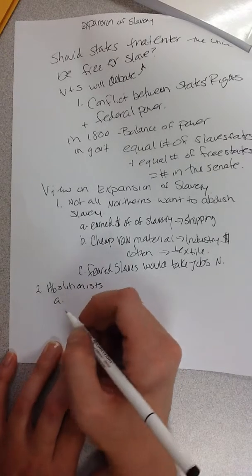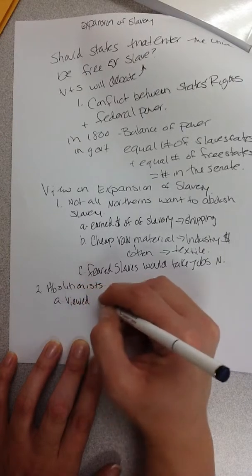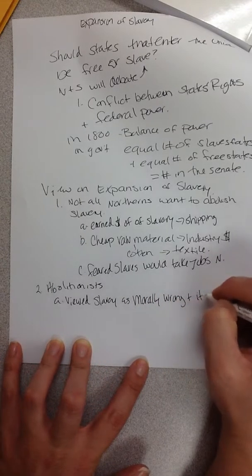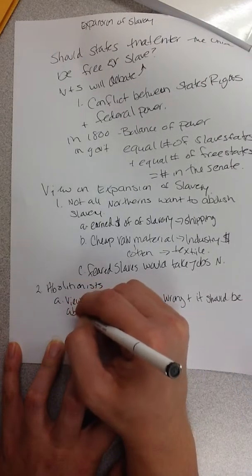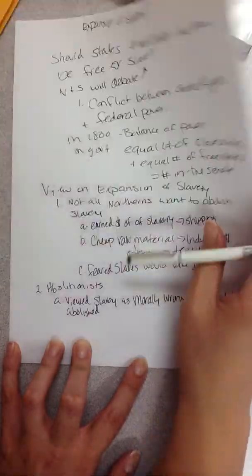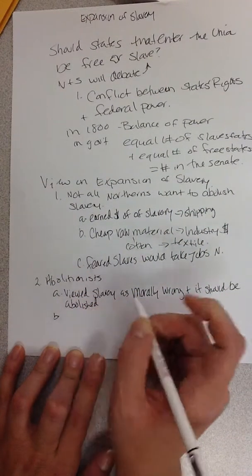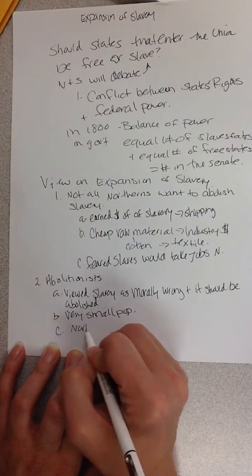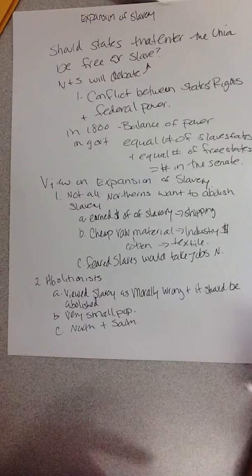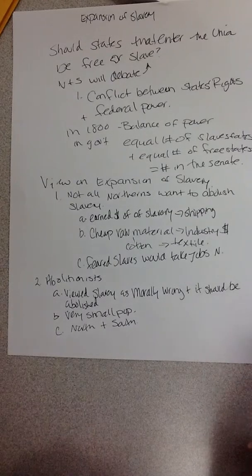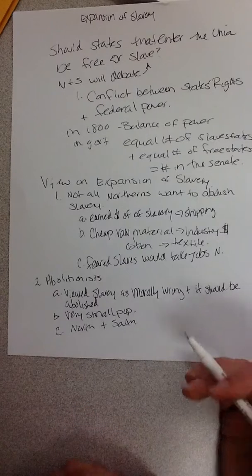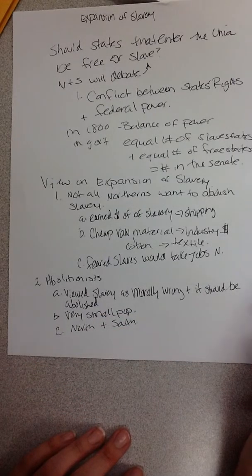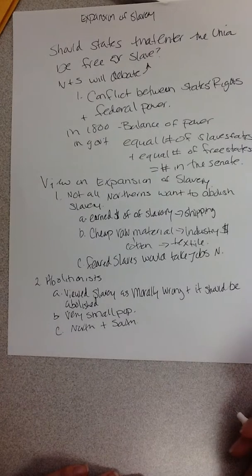Abolitionists were not very liked in the South. They viewed slavery as morally wrong and believed it should be abolished. But abolitionists were not well liked up North either — they had a very small population at first. Many Southern abolitionists moved to the North; the Grimké sisters are great examples, born in the South, they had slaves and left to move up North to be the abolitionists they wanted to be. The North did not want to be associated with abolitionists because most of them were women, and they didn't view women as very smart and respectable people in society.